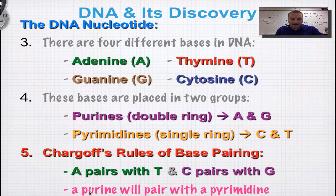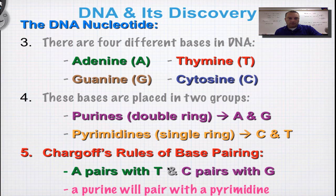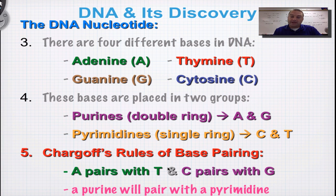A purine will always pair with a pyrimidine — in other words, a double ring will always pair with a single ring. That's going to end our screencast for this section. One more episode to go — we're going to talk about Watson and Crick in that one. So until next time, we have one more episode to go.